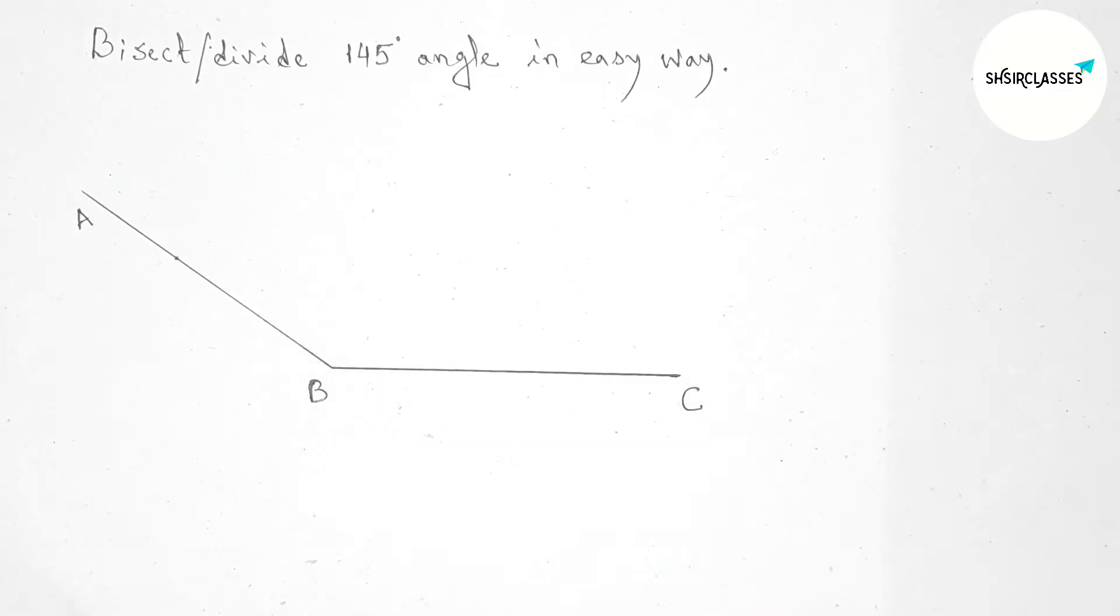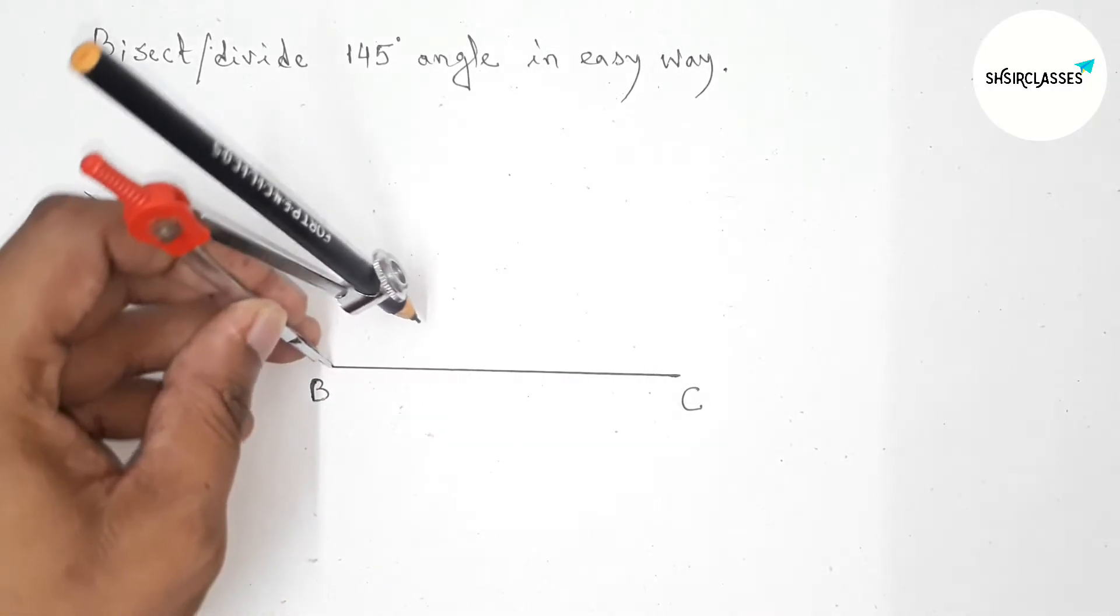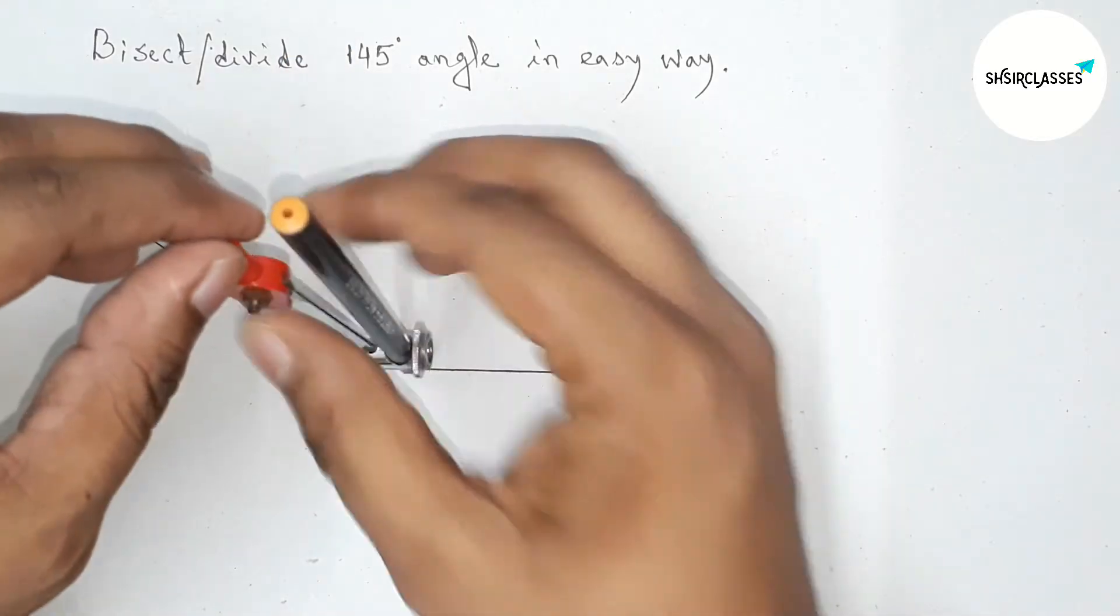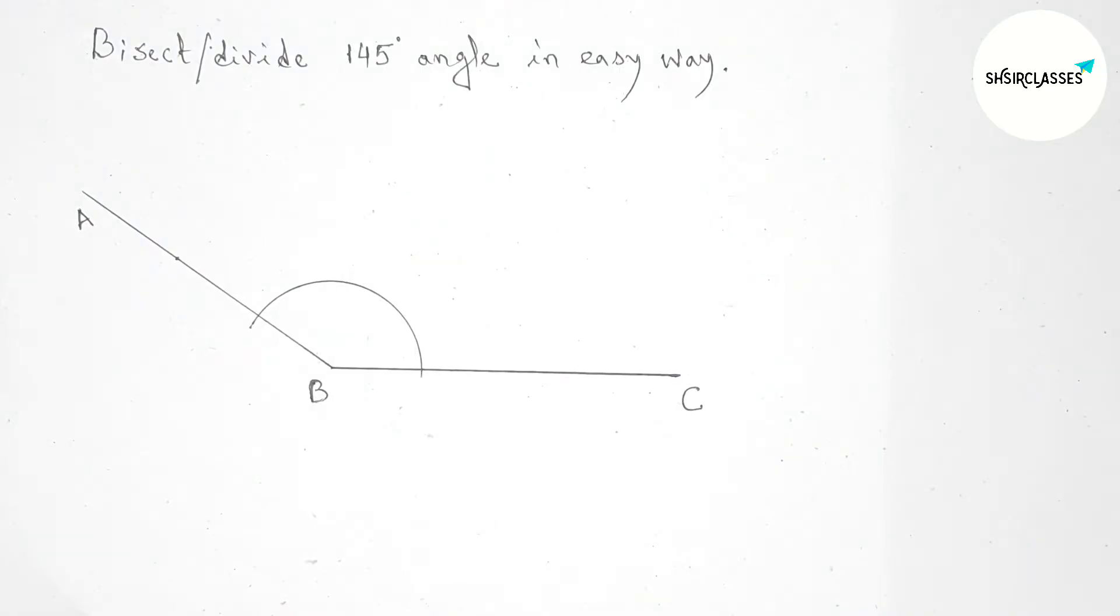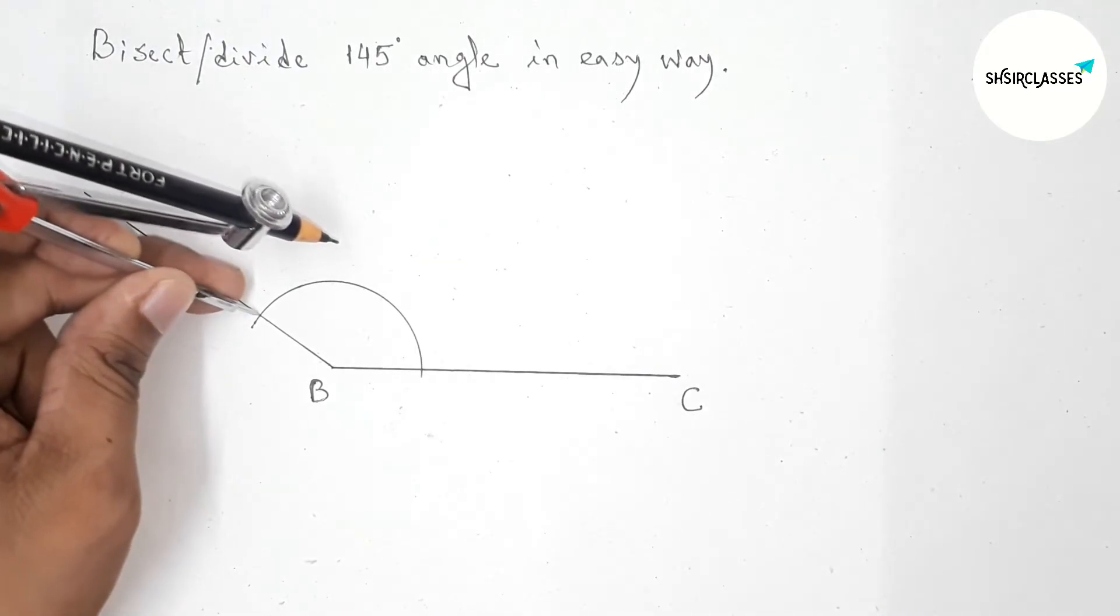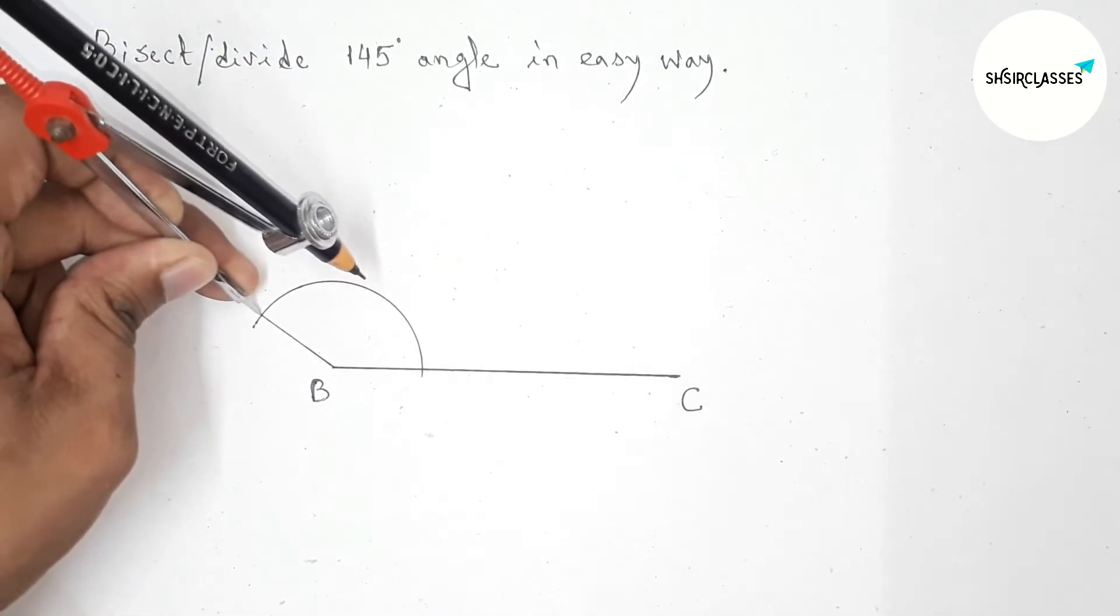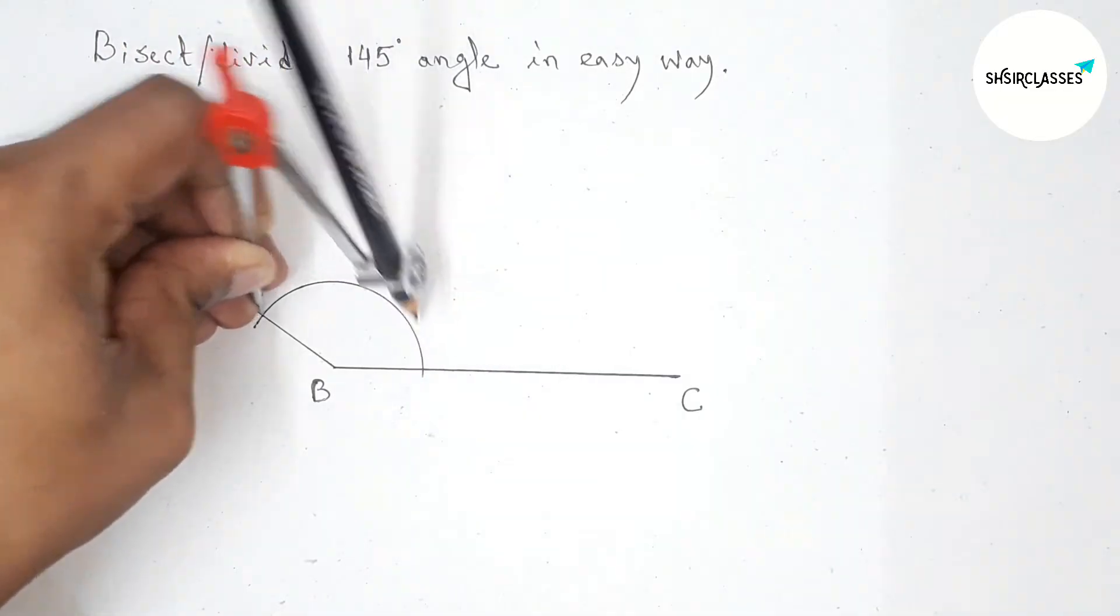Next, bisecting this angle with the help of compass. Putting the compass on point B and taking any length and drawing here an arc. Now putting the compass here and taking a length greater than this and drawing an arc here, and with same length putting the compass here and cut here.